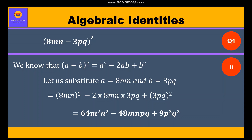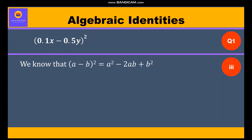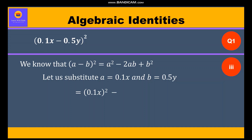Now we shall move to the third part: (0.1x minus 0.5y) whole square. We know identity 2 is (a minus b) whole square equal to a squared minus 2ab plus b squared. We shall substitute a equal to 0.1x and b equal to 0.5y. We will get (0.1x) squared minus 2 times 0.1x times 0.5y plus (0.5y) squared.